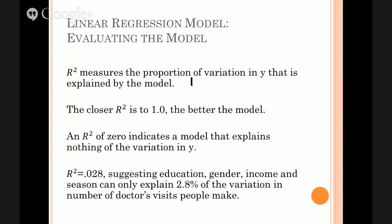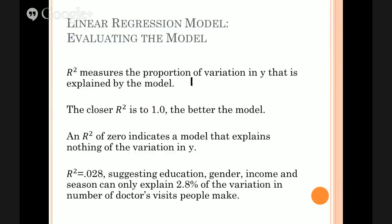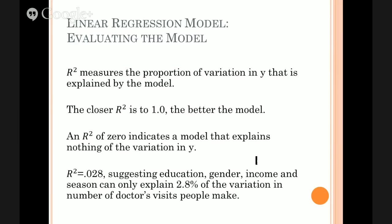This set of x variables—education, gender, income, and season of the year—explains only 2.8% of the variation in number of doctor's visits people make. It's not nothing. We concluded before that the p-values for some of these x's are small, so things like education, gender, and season do matter. They're still relevant variables. It's just that together they don't add much information—less than 3% of potentially 100% of the variation.